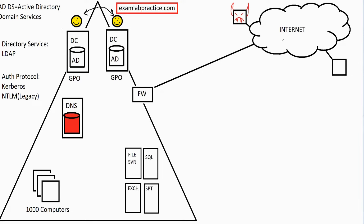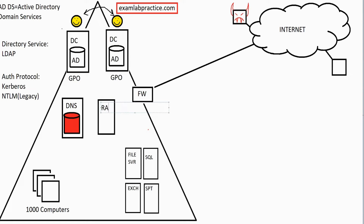We don't want hackers spying on our users or getting access to internal resources. Usually the way to address this is to use a VPN — a virtual private network. You could purchase a VPN concentrator, and in the Microsoft world we had a type of server we could set up called a RAS server, also known as an RRAS server, because it stands for Routing and Remote Access Services. Remote access services is the idea here, and with that we have support for VPN.